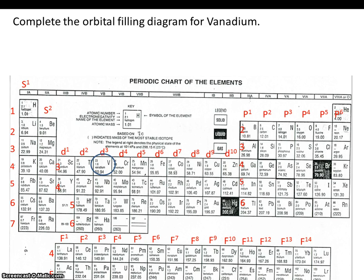Remember that hotel story? Imagine if 23 people came into the hotel. First they would fill the bottom floor, then they would fill the second floor, and they would work their way up through there, filling each level and each hallway and each bed. We're going to do the same thing for vanadium's electrons.